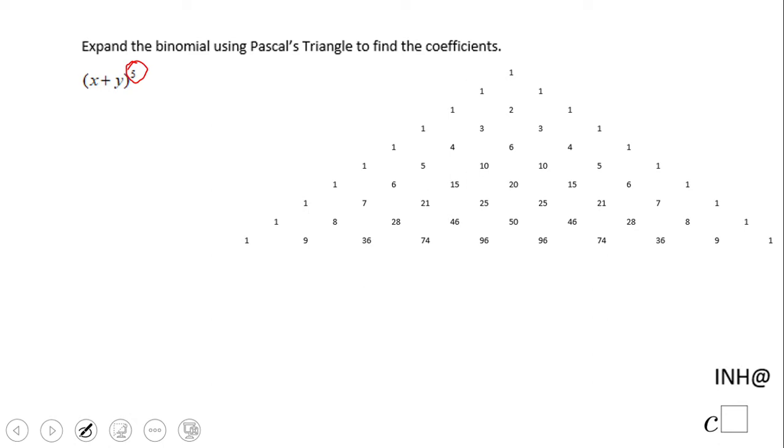So one, two, three, four, five, six - this is the sixth row, the one we're gonna use for our problem. Let's see what we get. We see the first number in this row is one.